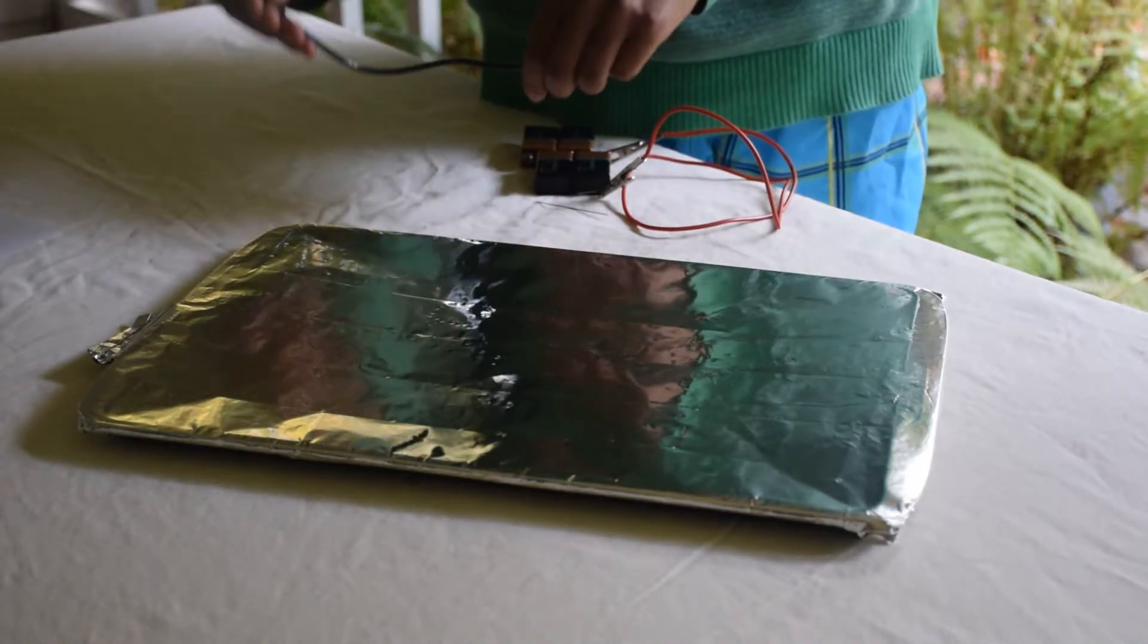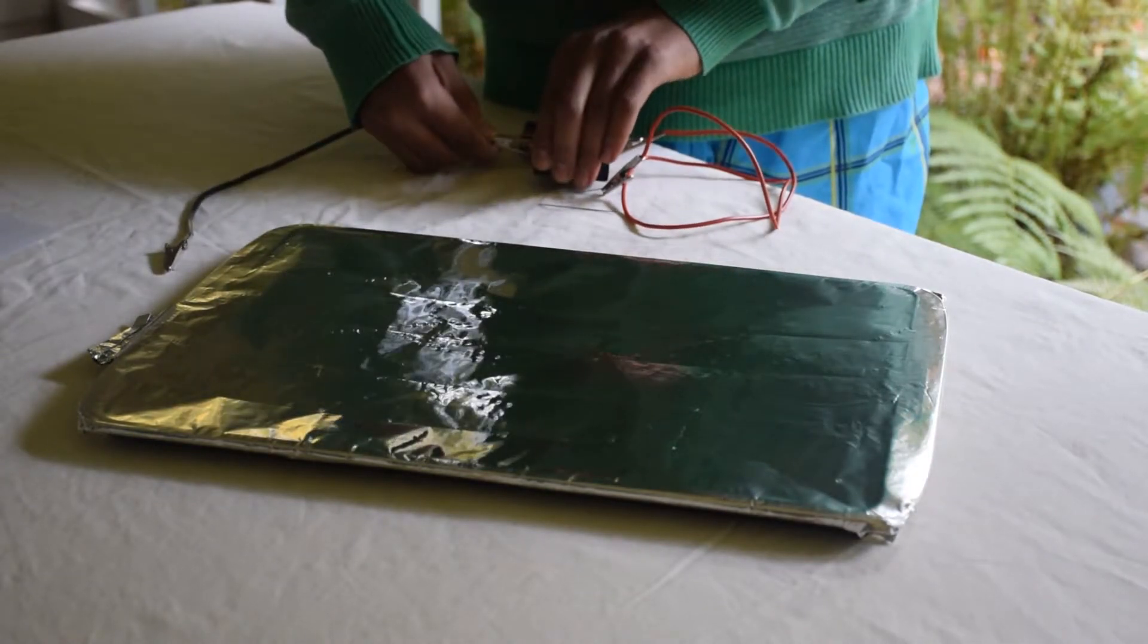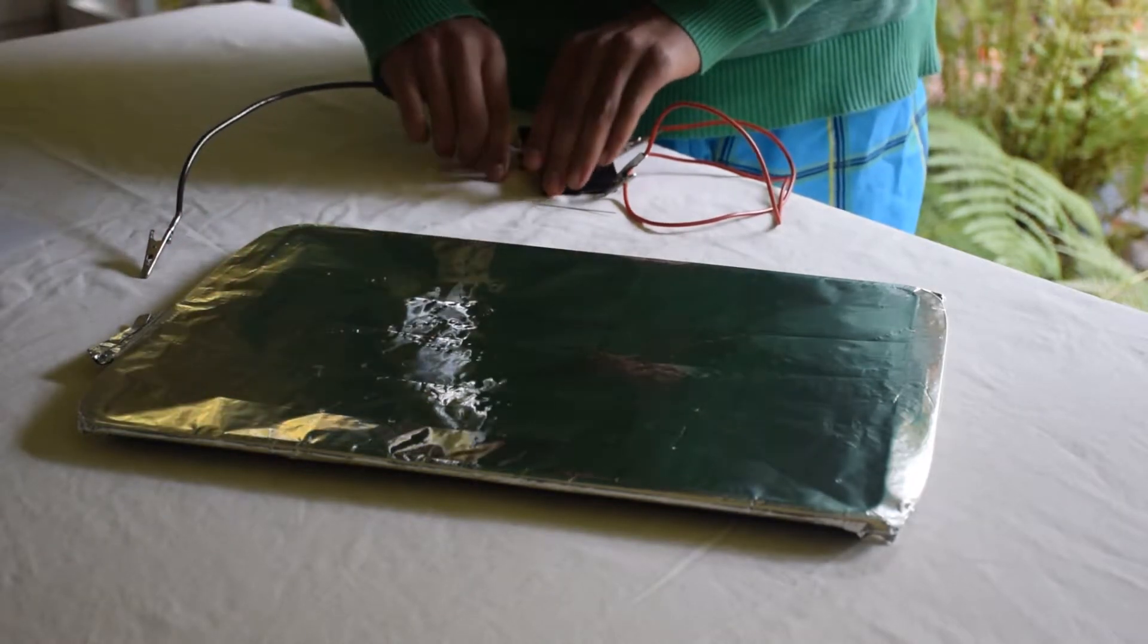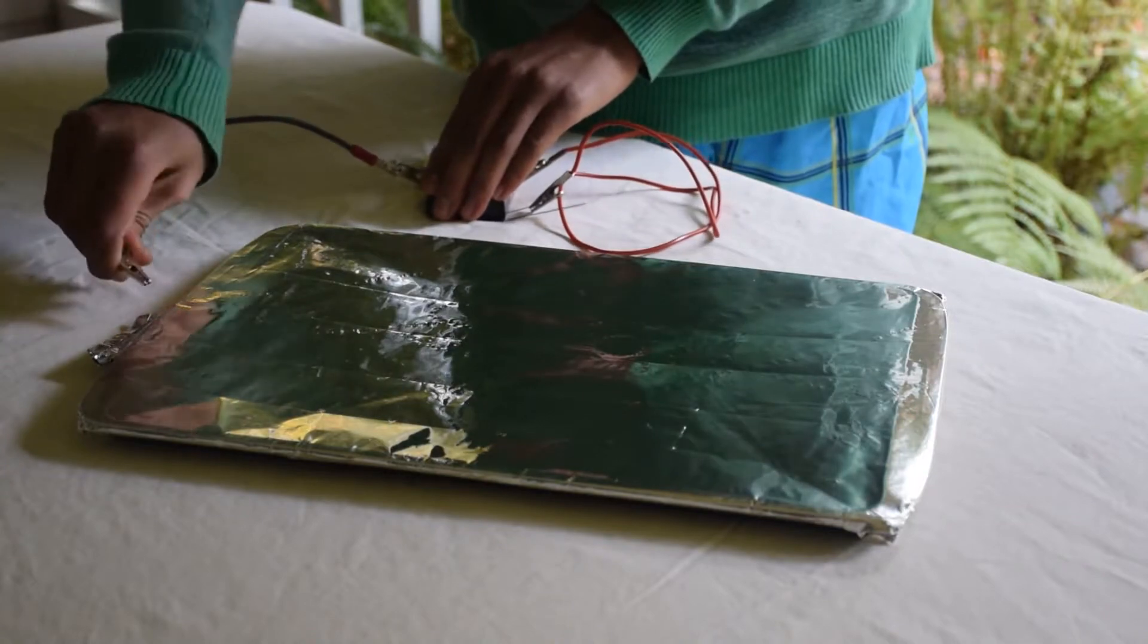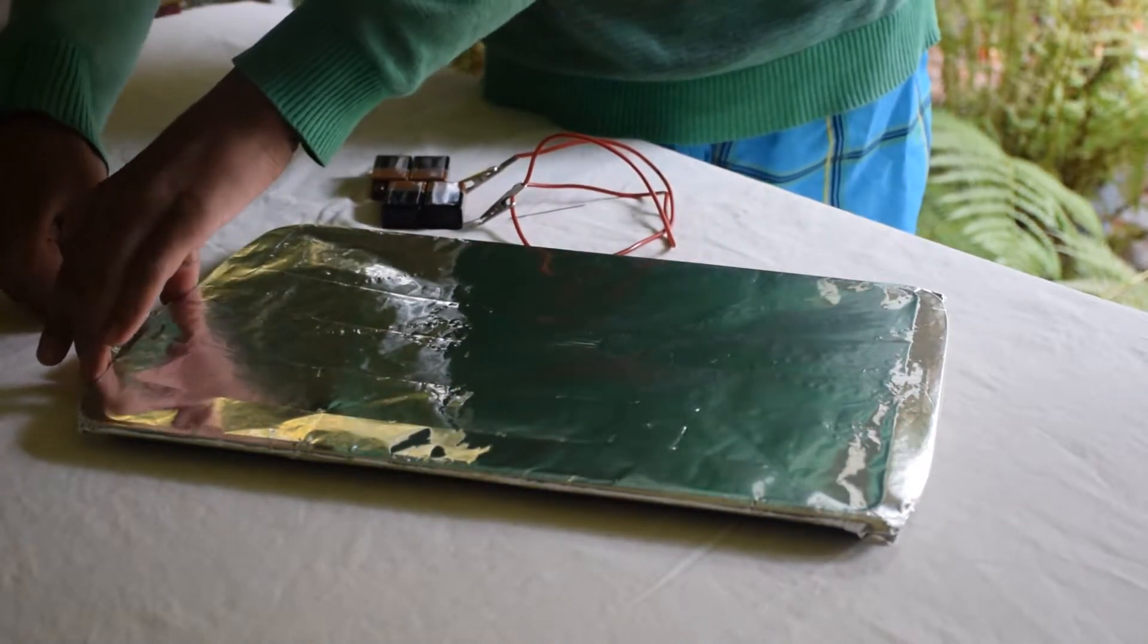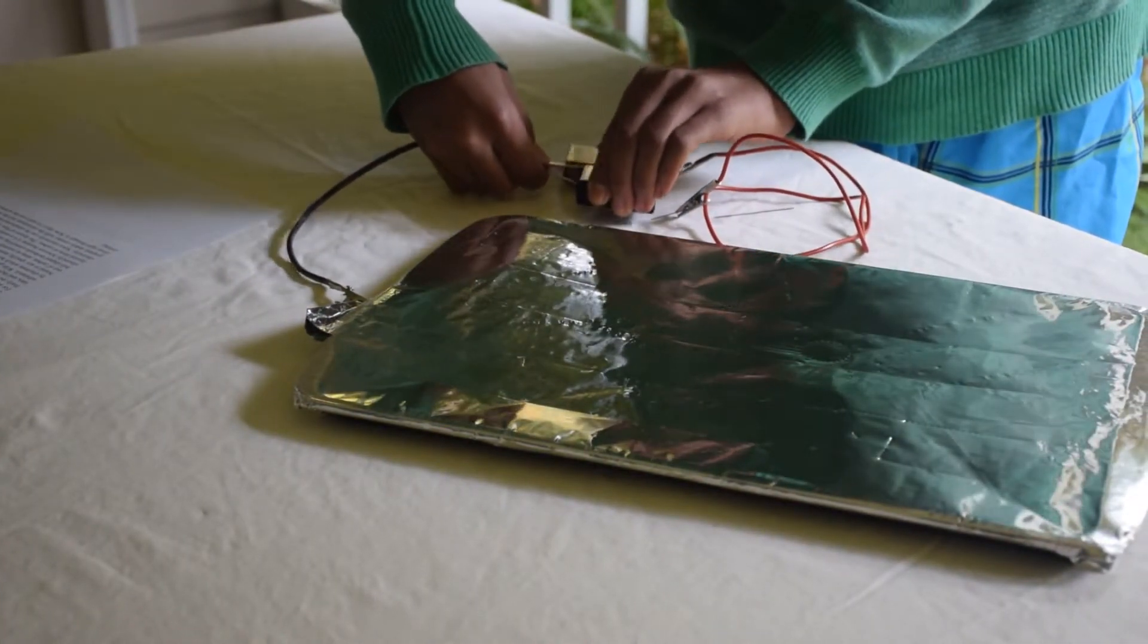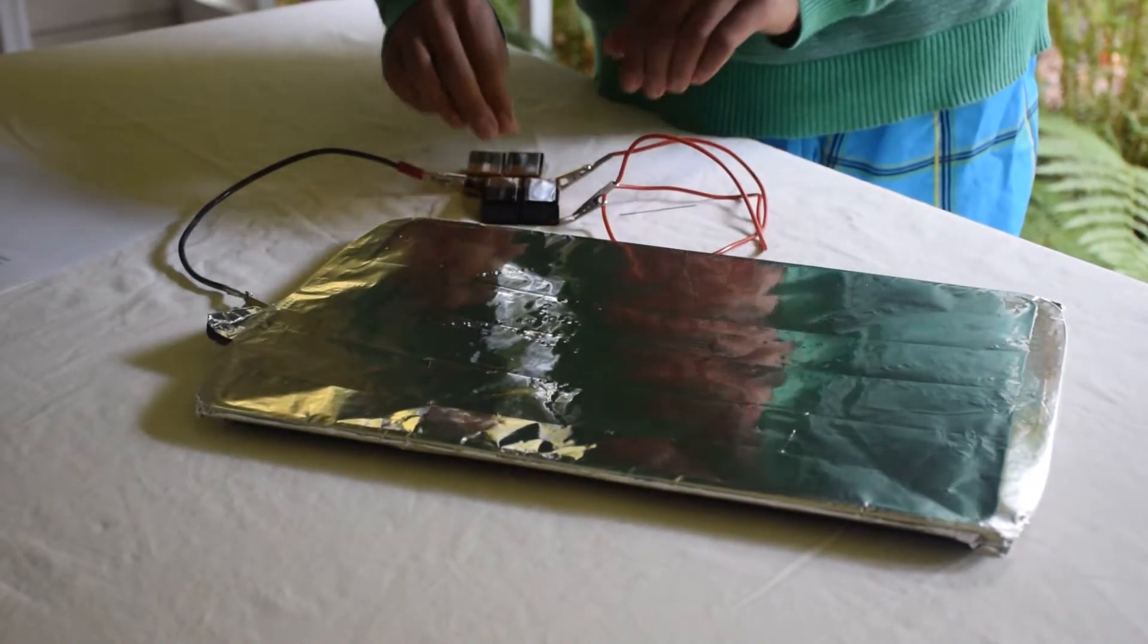Then you'll want to take your second alligator clip and attach it to the other side of the battery series. And then you'll want to attach it here. And make sure it doesn't snap off. Obviously I didn't have that on tight enough. There we go. Seems to be working now.